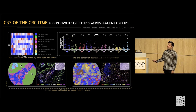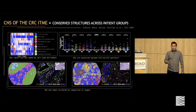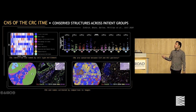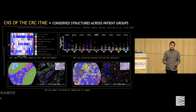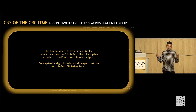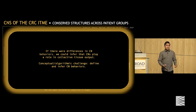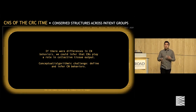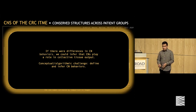After validating these neighborhoods, we compared across the two patient groups and saw that — apart from neighborhood five, which was the follicle of the TLS — all other neighborhoods were conserved across patient groups. This was a real opportunity to address whether these regions are playing a role in collective tissue output: if there's a difference in the behaviors of these neighborhoods between the two patient groups, we could infer that these CNs are playing that role.